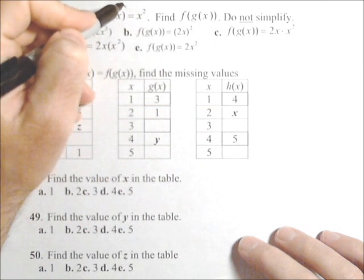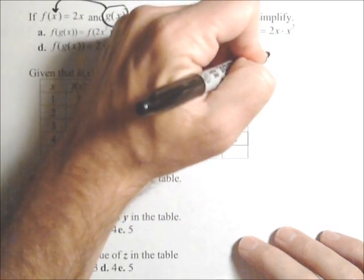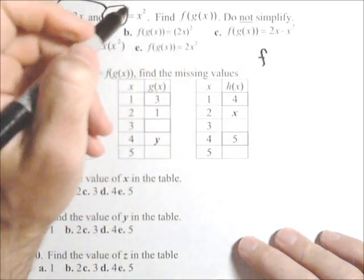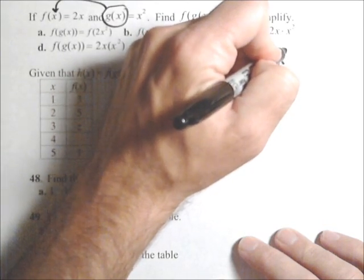What that means is we're putting g of x as the input into f. So what we're actually trying to find is f of, and I'm going to just replace g of x with what it is, x squared.